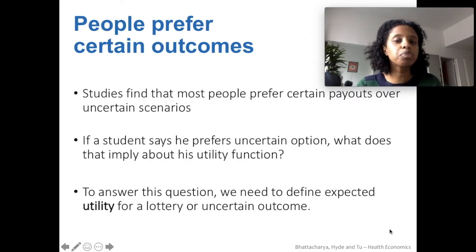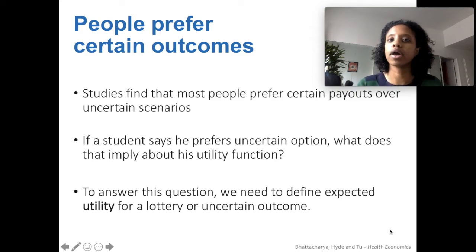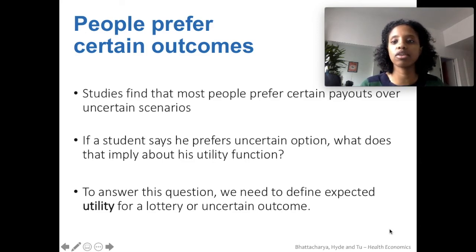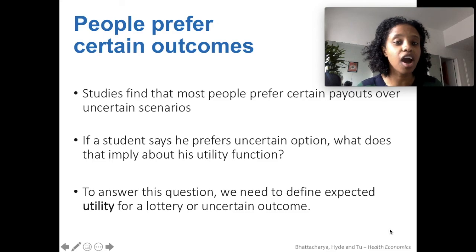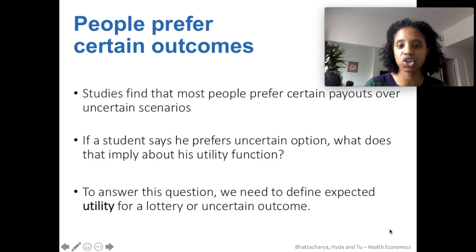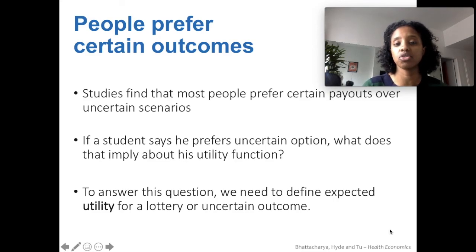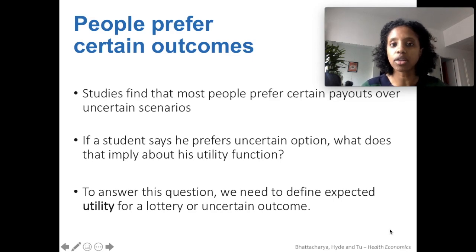However, most people would prefer the $250 check with certainty, as opposed to a lottery of the same expected value. There are a lot of empirical studies that suggest that people prefer certainty even at the same expected value. If you actually prefer the uncertain option, that says something different about your utility function — but we'll get into that. So first, we're going to define expected utility in a similar way as how we've defined expected income, for a lottery meaning an uncertain outcome.